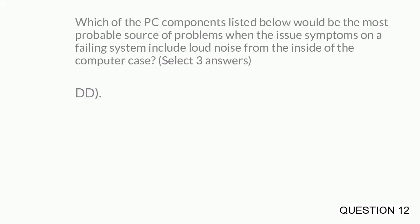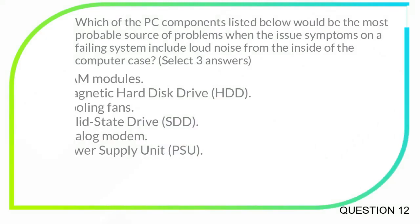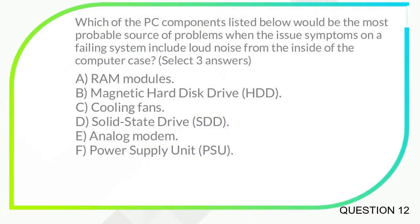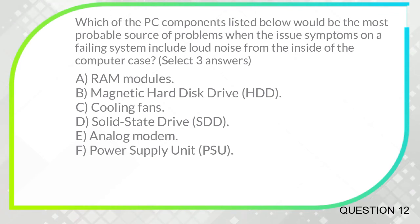Which of the PC components listed below would be the most probable source of problems when the issue symptoms on a failing system include loud noise from the inside of the computer case? Select three answers. A. RAM modules. B. Magnetic hard disk drive, HDD. C. Cooling fans. D. Solid state drive, SSD. E. Analog modem. F. Power supply unit, PSU.